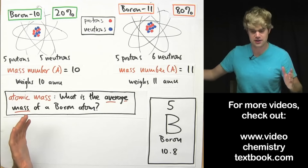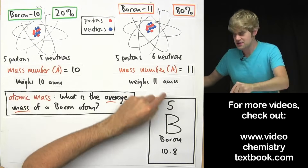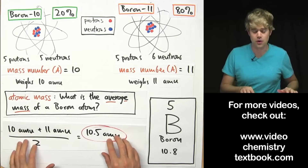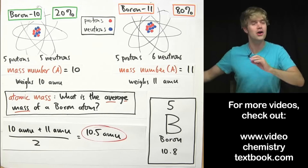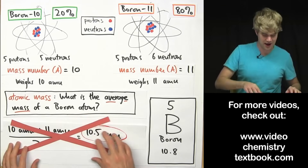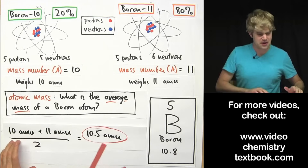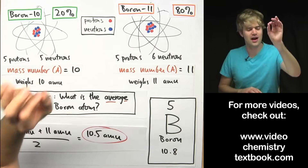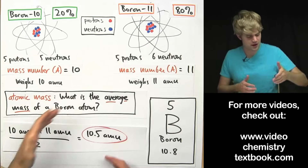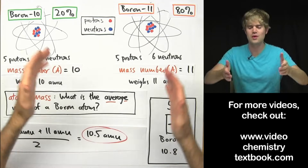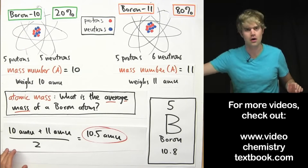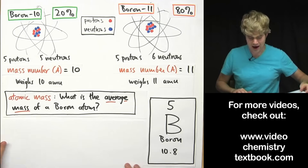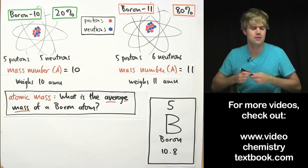You might think: that's easy, I know how to take an average. This one weighs ten and this one weighs eleven, so just add them up — ten plus eleven — and divide by two to get ten point five. But that's wrong. That method assumes we have the same amount of both. If we had fifty percent boron-10 and fifty percent boron-11, we could divide by two. But we can't do that here because we have different amounts of these two types of atoms, so we need a more complex equation to account for those different abundances.